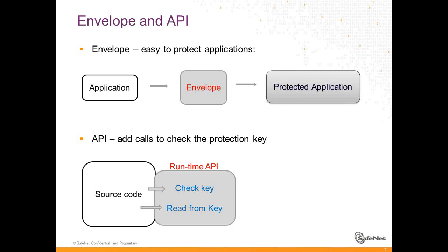There is another, further way to protect, which is to use the licensing API or runtime API. This API is, as a matter of fact, a DLL — in most cases you can take it as a DLL. Inside this DLL there are functions that you need to call inside your application source code.